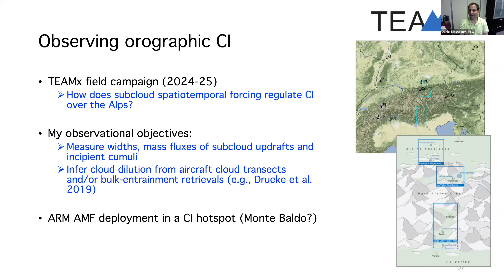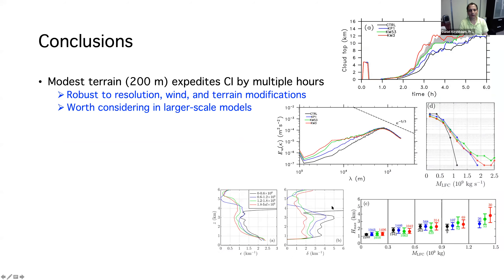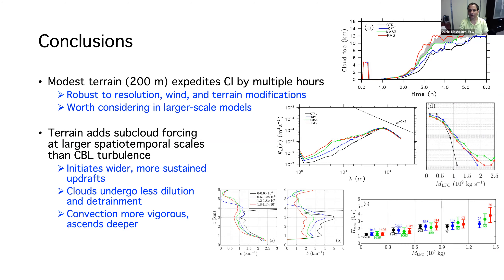To finish, I'll mention TMEX, a field campaign taking place over the Alps in 2024-25. We're focusing on the Italian region, specifically Monte Baldo next to Garda Lake, where a convection initiation climatology found an intense ring of convection initiation on the southern rim of the Alps. We want to place instruments there to study cloud formation, and the campaign will be an opportunity to test ideas about how updraft size and mass flux affect the fate of cumulus thermals.